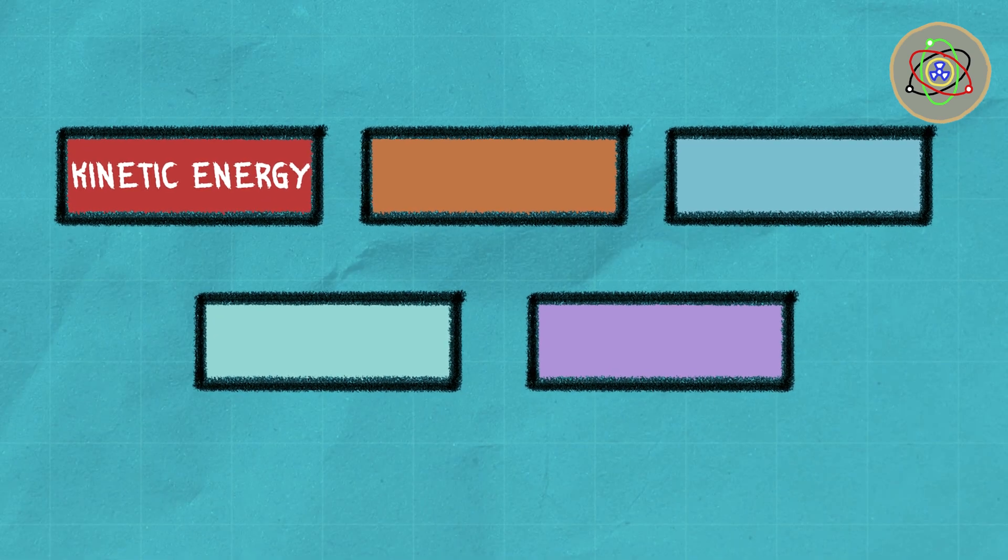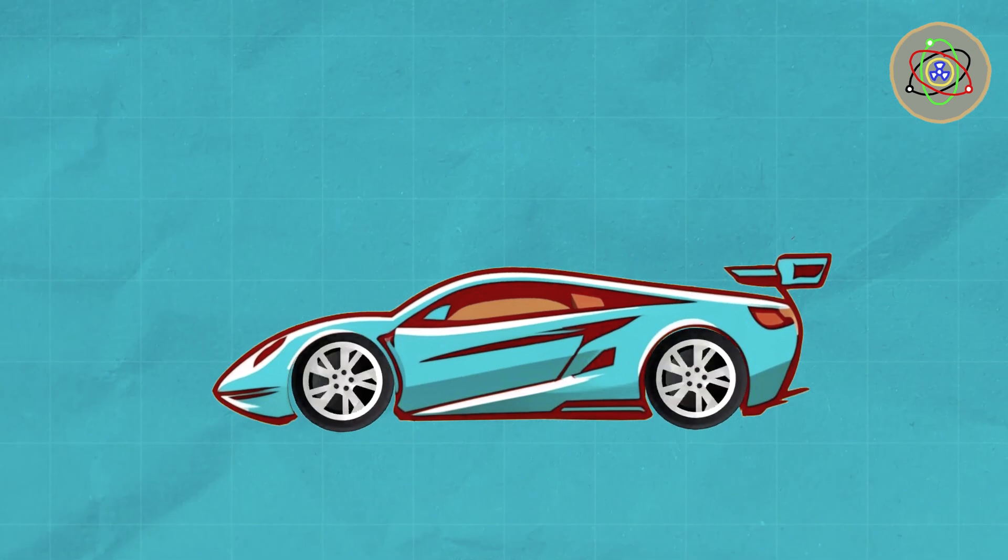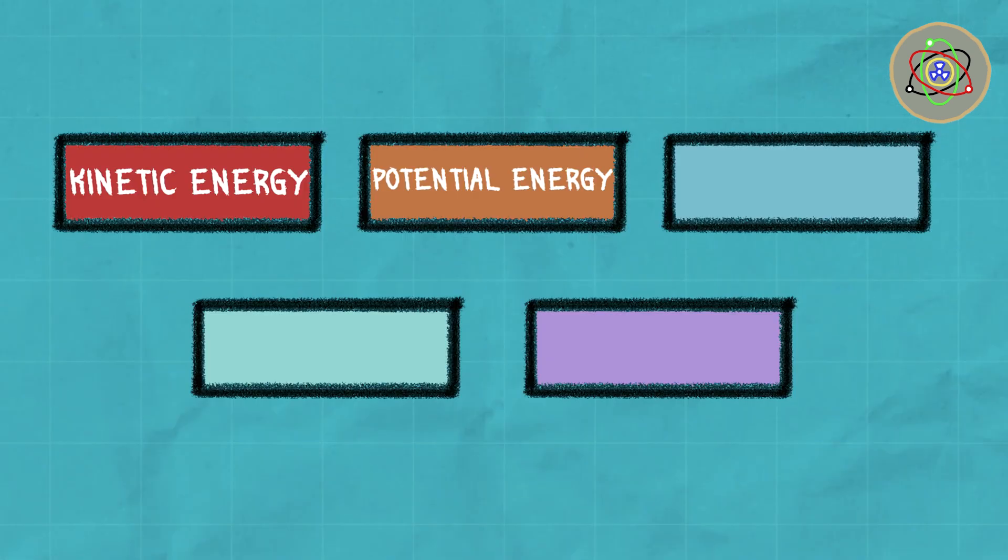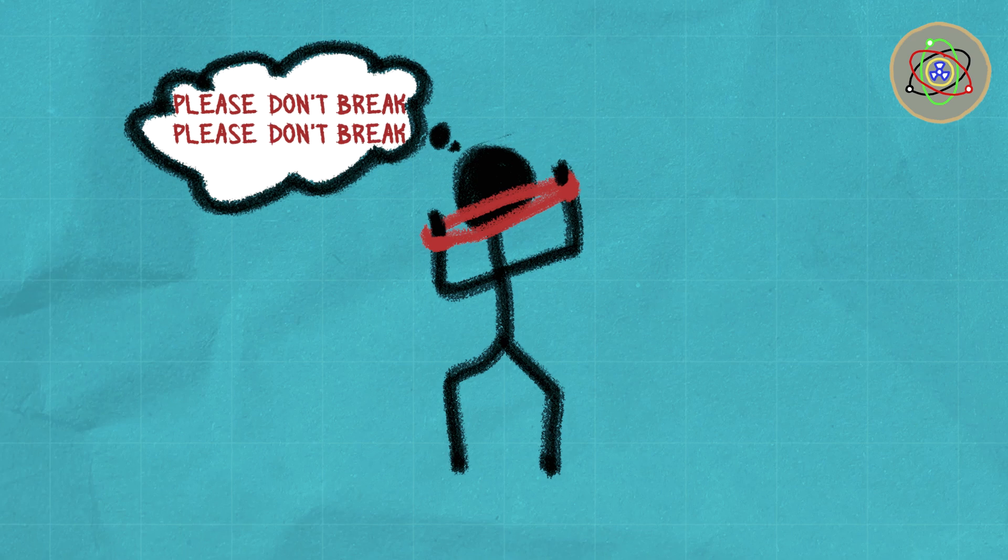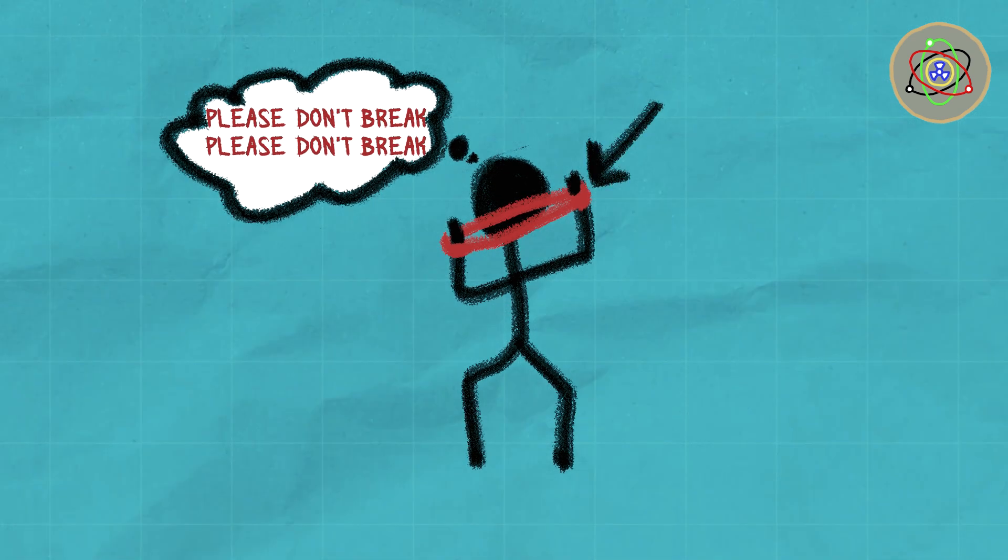You've got kinetic energy, the energy of motion, for example a speeding race car. Then there's potential energy, stored energy due to position or configuration, like a stretched rubber band.